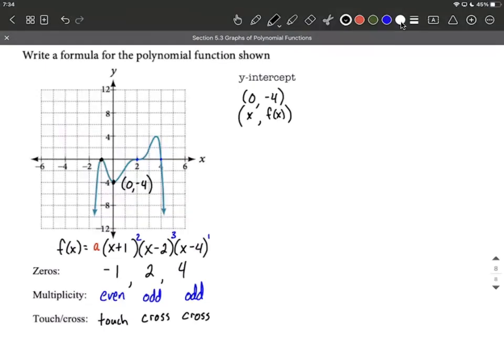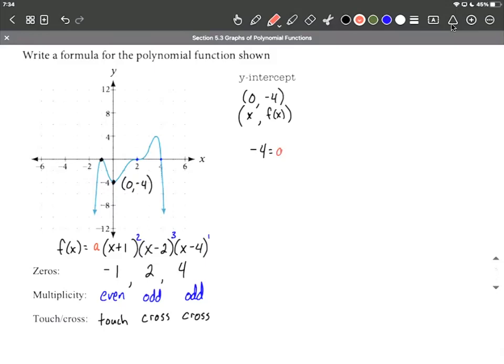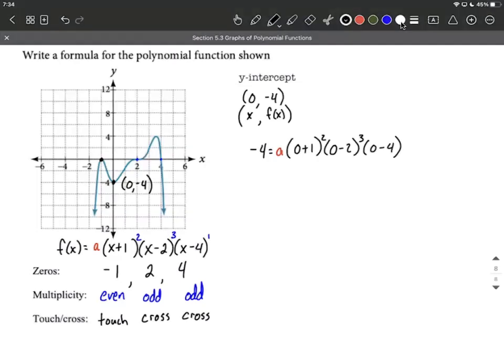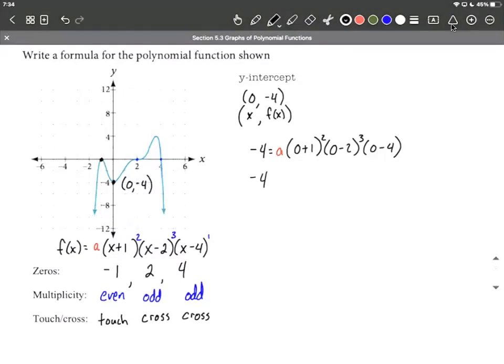So what I'm going to do is I'm going to replace in the function that we're creating, I'm going to replace f of x, the left side, with negative four. And on the right-hand side, for each one of our x's, I'm going to replace them with zeros. So zero plus one to the second power, zero minus two to the third power, and zero minus four. From here, we have an equation that has a bunch of numbers, but only one unknown. We don't know what a is yet.